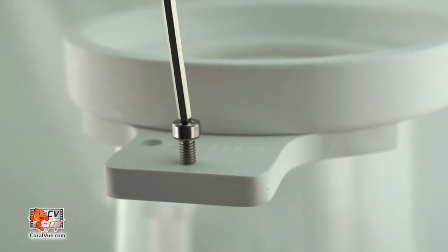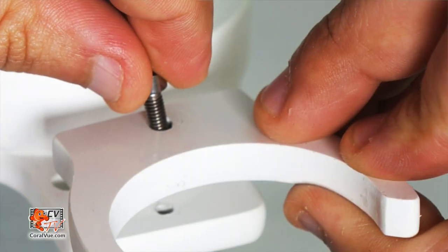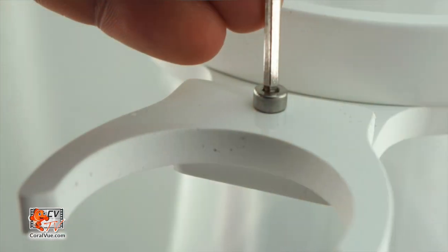Next, remove the screw and install the silencer bracket at the top of the skimmer body and secure it in place with the screw.